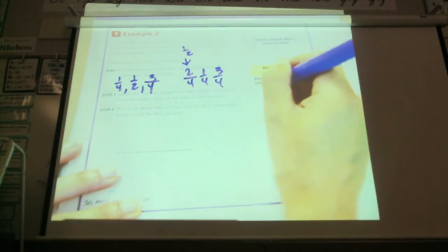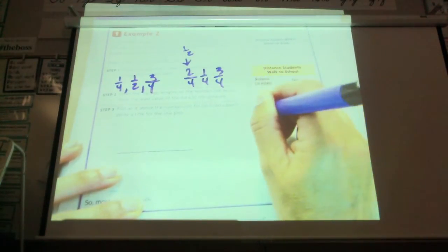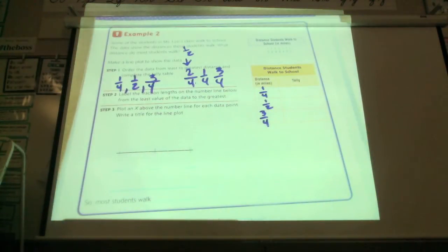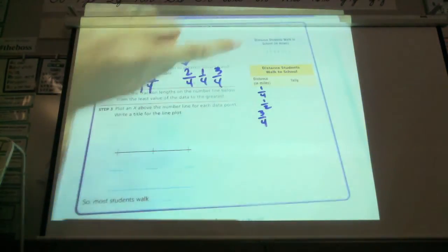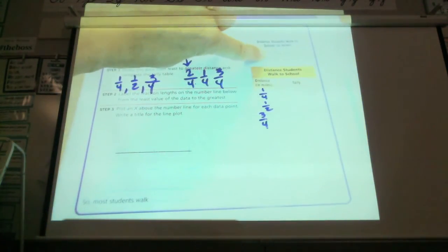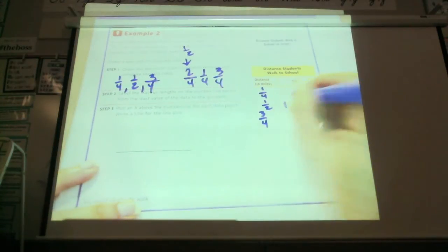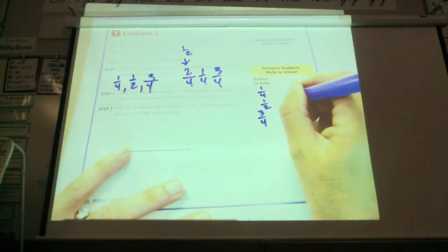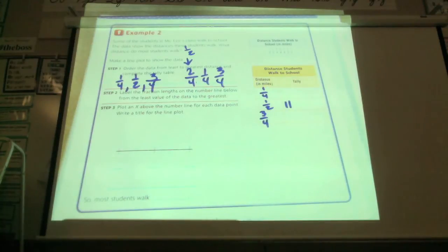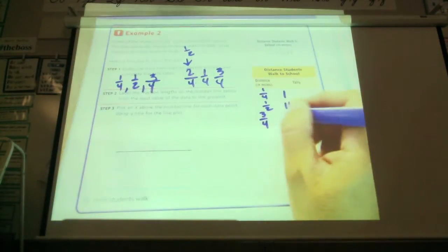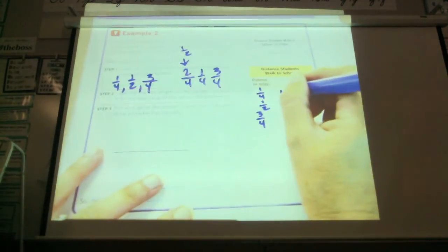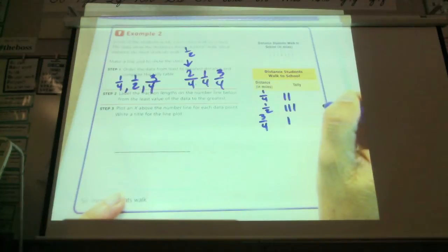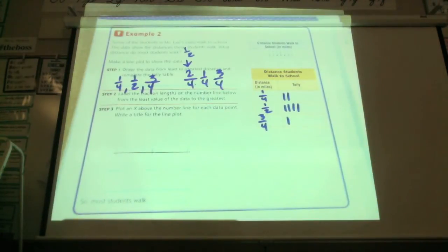Now I'm going to write them on my chart here. One-fourth. One-half. Three-fourths. Okay, so let's start doing the tally marks. So my first one is what? Looking up here. One-half. So I'm going to put a tally mark. My next one is? One-half. Then? One-fourth. One-fourth. And then? Three-fourths. Three-fourths. One-fourth. And then one-fourth. One-half. One-half. One-half. One-half. Okay.